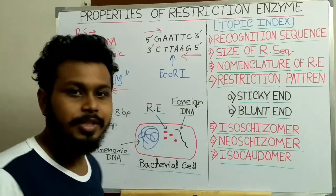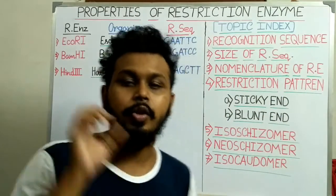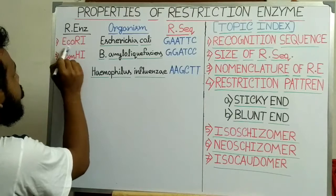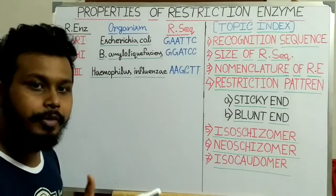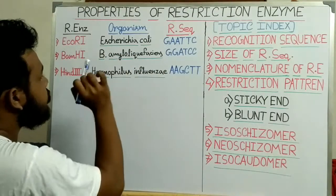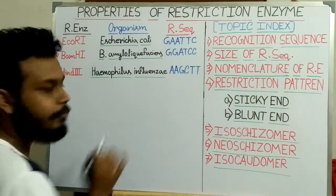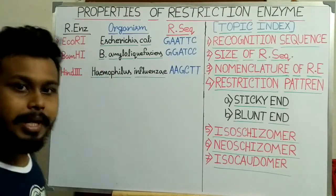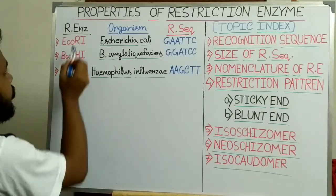Now I will discuss about the nomenclature of restriction enzymes. For example, here three different restriction enzymes are present: EcoR1, BamH1, and HindD3. The organisms from which these restriction enzymes are isolated are Escherichia coli for EcoR1, Bacillus amyloliquefaciens for BamH1, and Haemophilus influenzae for HindD3. These are also the recognition sequences for these restriction enzymes. Now the question is what does the name of these restriction enzymes signify?